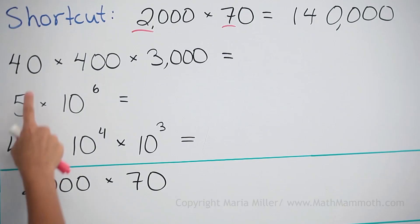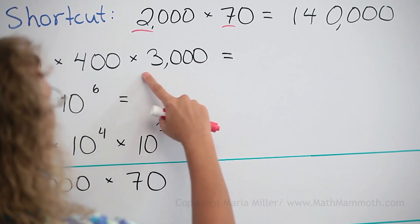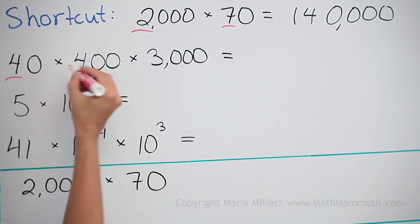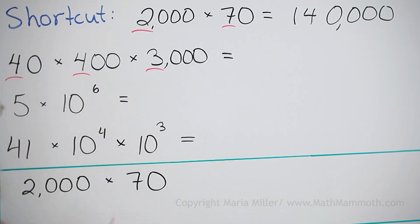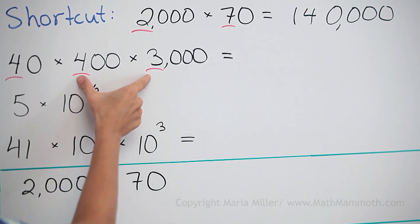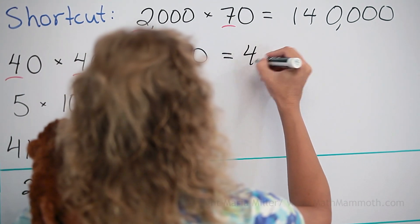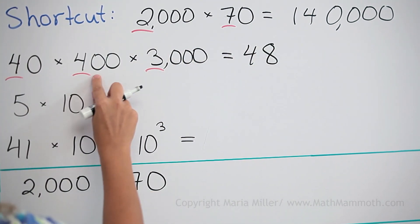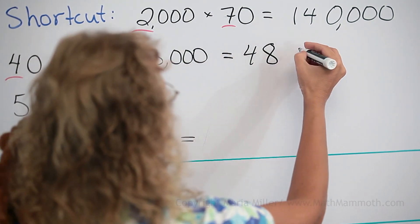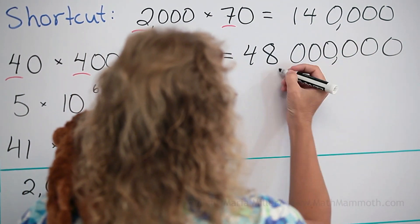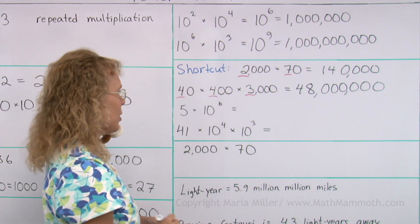Let's try one more: 40 times 400 times 3,000. Multiply 4 times 4 times 3 — so 3 times 4 is 12, times 4 is 48. Then count the zeros: 1, 2, 3, and 3 more — six zeros total. The answer is 48 million.